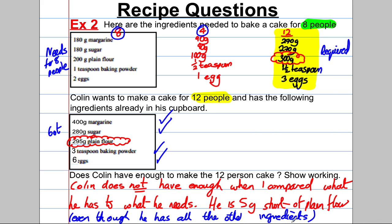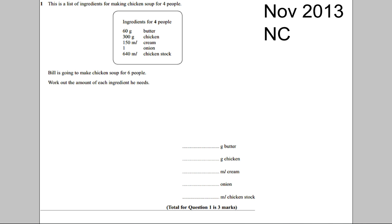Pause the video now — the questions are on the worksheet from the website or on screen. Work through them all, and only when you've done all the questions come back to mark them. Going through the first one: here's the amount for chicken soup for four people. We want it for six people. How do you use the amount for four people to get six? You need another two people.